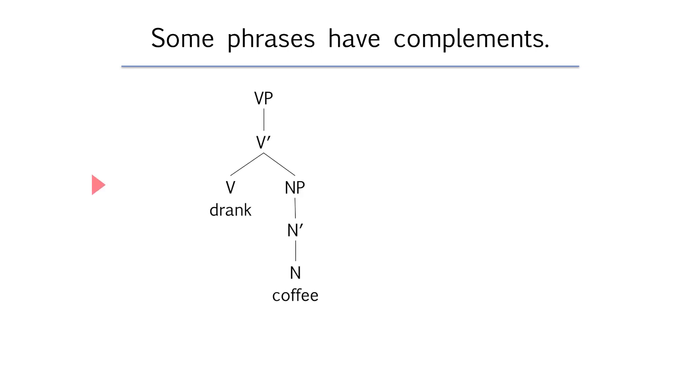Here we've got a verb phrase with the verb drank as its head. That head has the noun phrase coffee as its sister. The NP coffee is sister to the verb head and daughter of the V-bar node so it's a complement of the verb. Here's another example that has the same structure but a different category. The head of this phrase is the preposition near so the phrase is a preposition phrase. The complement of the preposition is the noun phrase campus and the whole phrase is near campus. Try to think of some other examples of verbs and prepositions that take noun phrases as their complements.